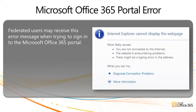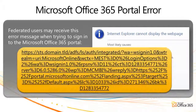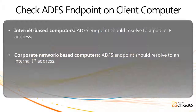Sometimes, when a user whose account is set up for Identity Federation in your Office 365 environment tries to sign in to the Microsoft Office 365 portal, they may receive this error message, while the Internet browser's address bar displays a web address similar to this. This can happen if the computer can't contact the on-premise ADFS Federation service or an Internet-facing ADFS proxy server, depending on the user's location.